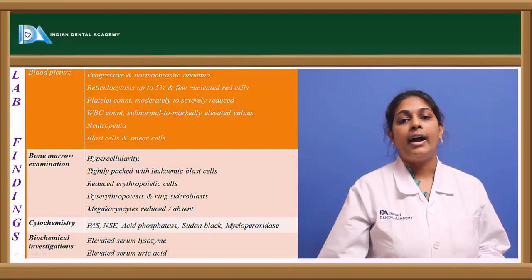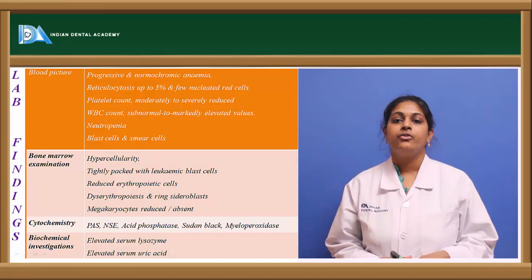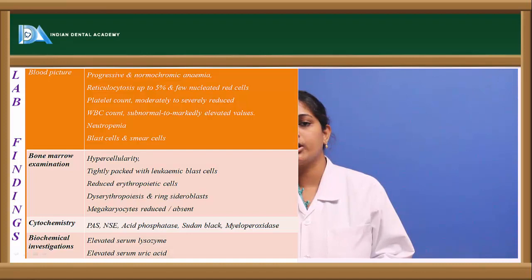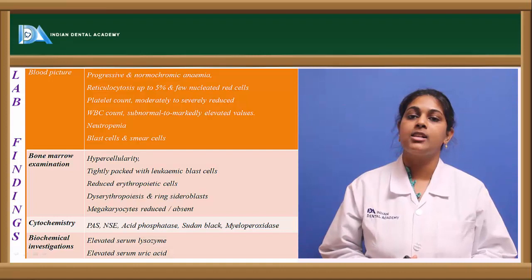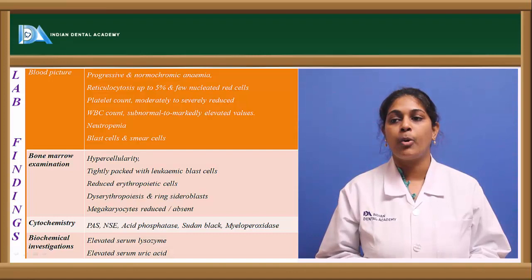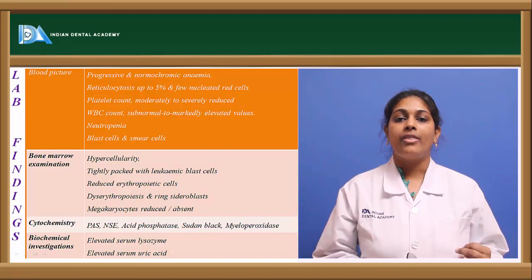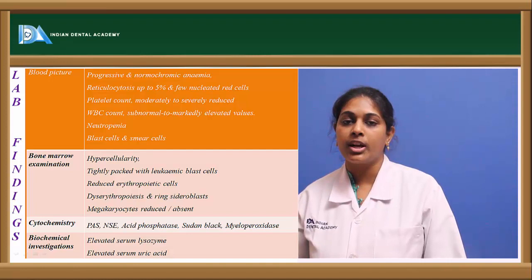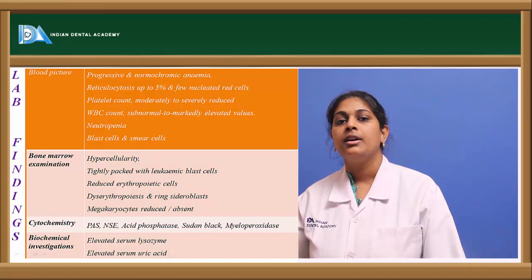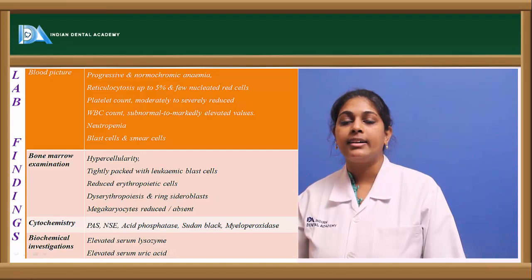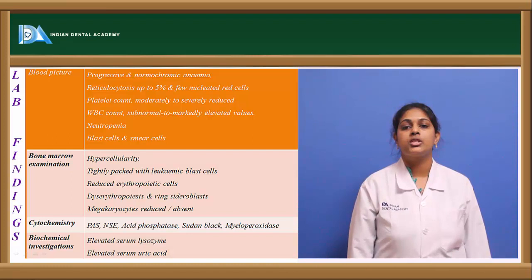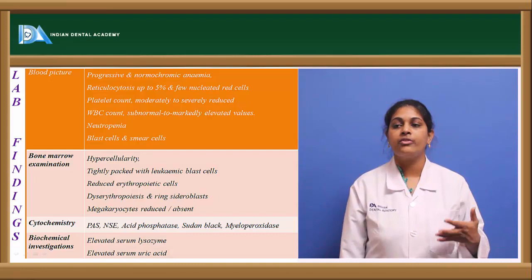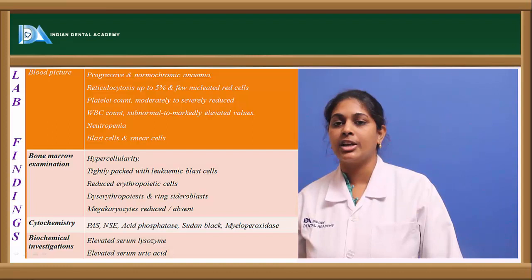Bone marrow examination shows hypercellularity with alterations in the myeloid and erythroid series, with numerous tightly packed leukemic blast cells. Erythropoietic cells and ring sideroblasts may be reduced, and megakaryocytes are reduced or completely absent. Cytochemical stains used include periodic acid-Schiff stain, nonspecific esterase, acid phosphatase, Sudan black, and myeloperoxidase — each staining specific groups in FAB classification. Biochemical investigations reveal elevated serum lysozyme and elevated serum uric acid.